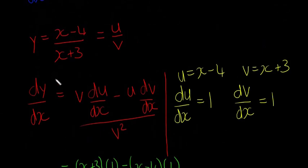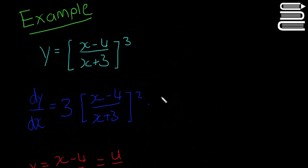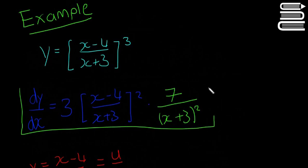So remember, this isn't the whole dy/dx, this is just this little bit. So I'm going to stick it back in in green, multiplied by 7 over x plus 3 all squared. And then draw a little box around it for our final answer.